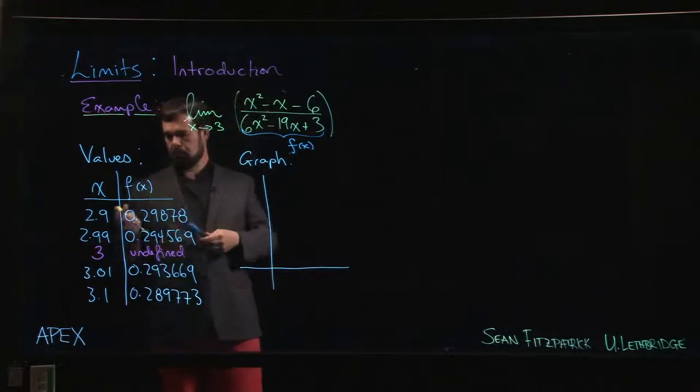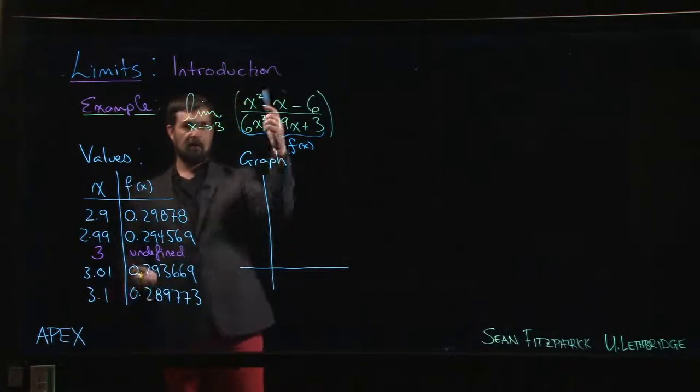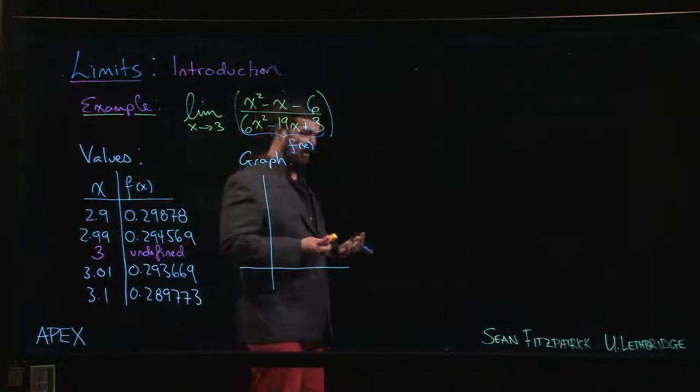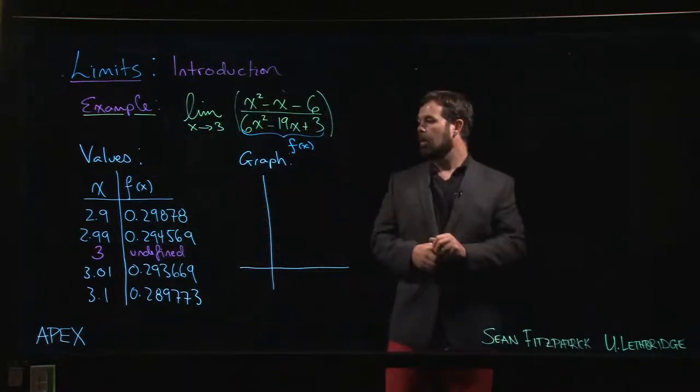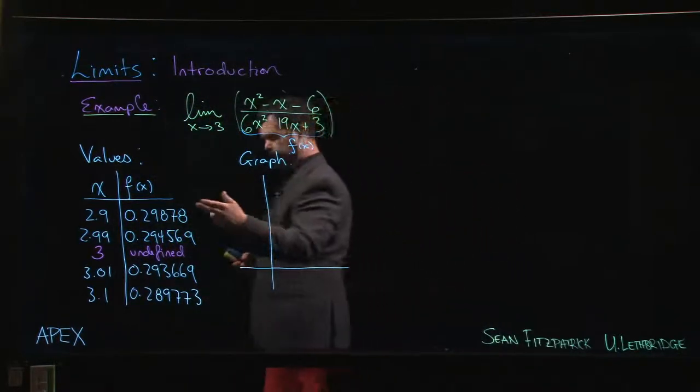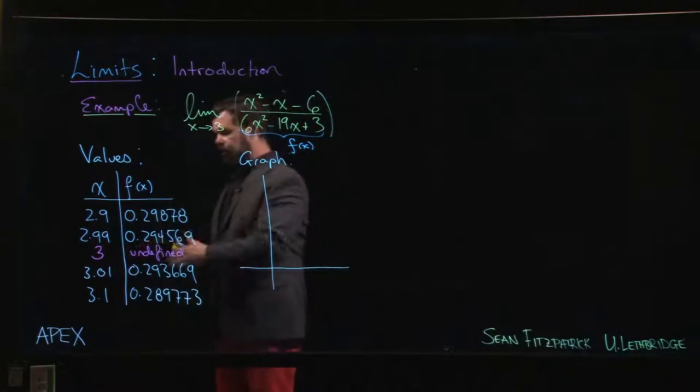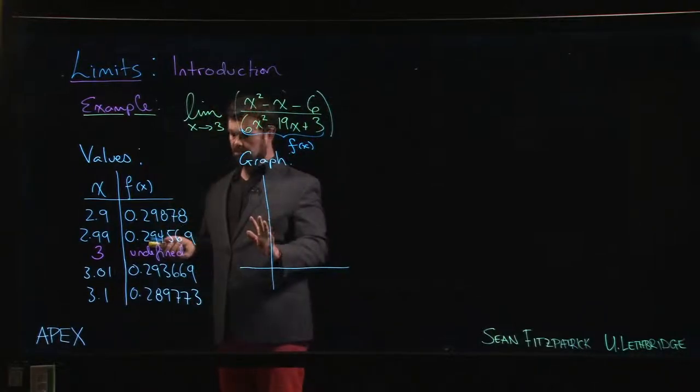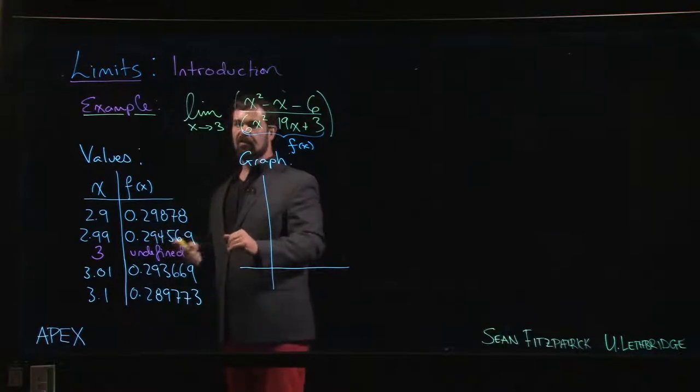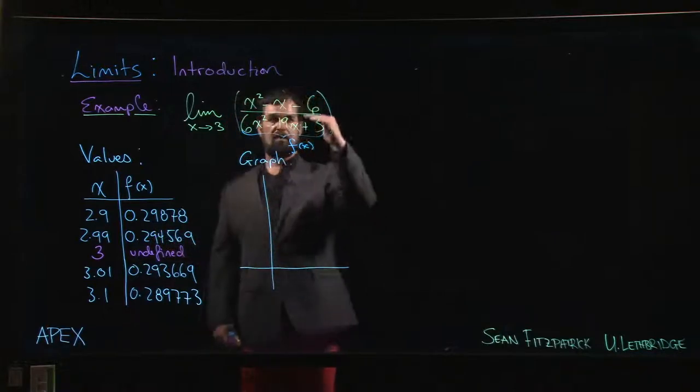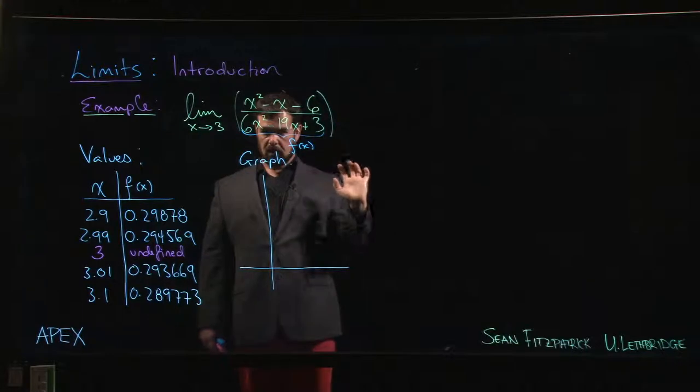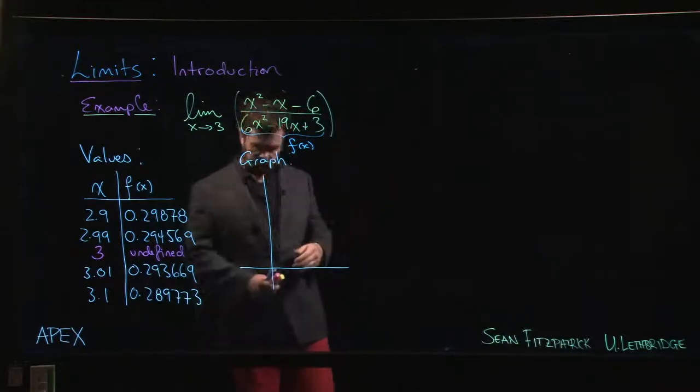You can take various x values, plug them into the function, use your calculator, and see what you get. These are some of the outputs you get, but of course at three you don't actually get a result because if you put in x equals three you get zero divided by zero. Division by zero is not defined, even zero over zero.